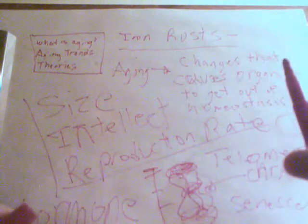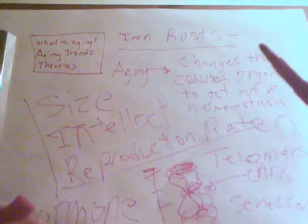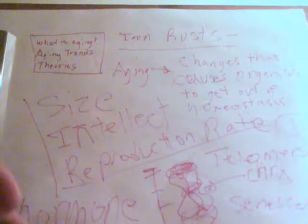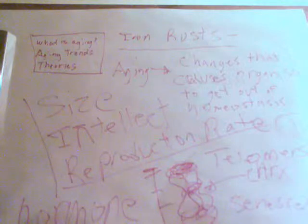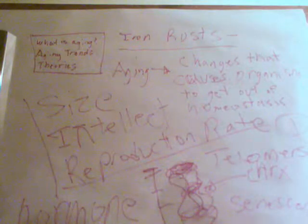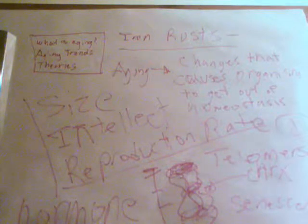Another theory is the hormone theory: different hormones can control your lifespan or essentially regulate your body's size and balance. Different regulatory processes in the body are controlled by hormones such as growth hormone and IGF-1, insulin-like growth factor 1.